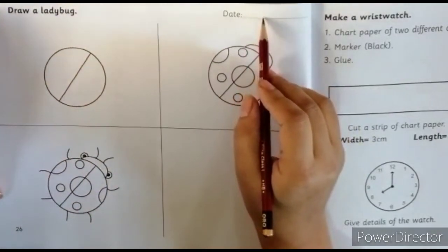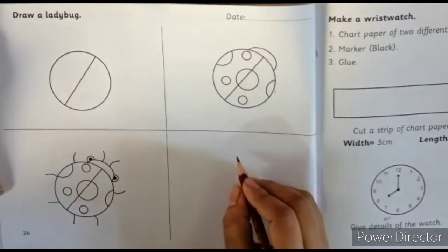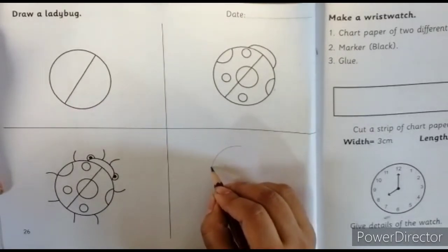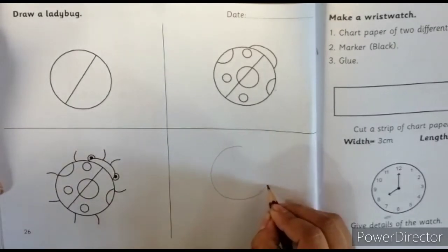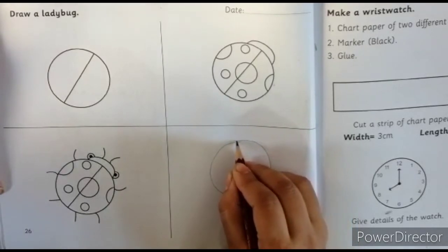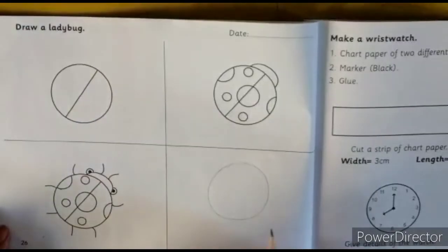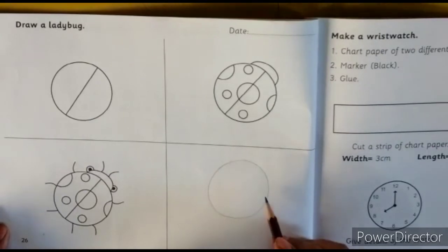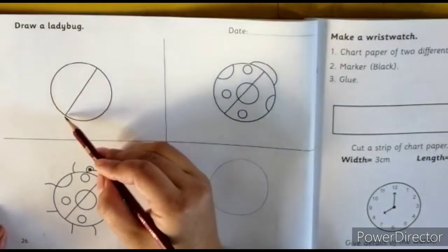Jis din aapne kaam karna hai, us din ki aapne date daalni hai. Okay. So first we make a circle. Then make a diagonal line.